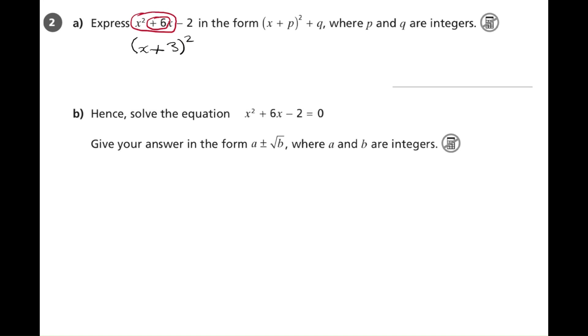But to make this multiply out to give the original x squared plus 6x, we always have to subtract the number inside the bracket, the plus 3 squared.